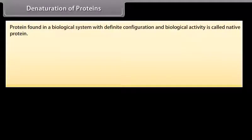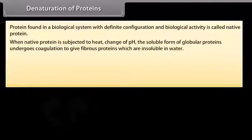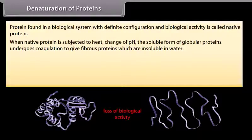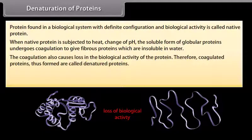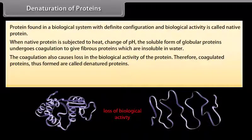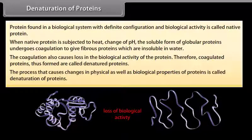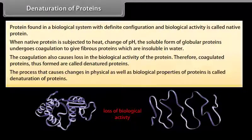Protein found in a biological system with a definite configuration and biological activity is called native protein. When native protein is subjected to heat or change of pH, the soluble form of globular proteins undergoes coagulation to give fibrous proteins which are insoluble in water, causing loss of biological activity — these are called denatured proteins. The process that causes changes in physical as well as biological properties of proteins is called denaturation. Examples: coagulation of egg on boiling and curdling of milk.